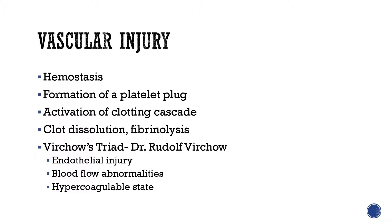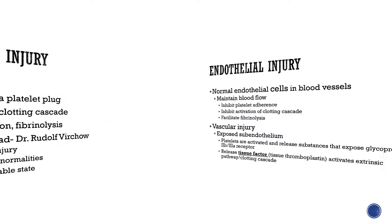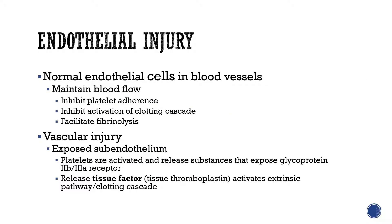Those three factors include: endothelial injury — for example, caused by atherosclerosis, which leads to platelet adhesion and aggregation; abnormalities of blood flow — such as turbulent blood flow in the arteries and stasis of blood flow in the veins, which promote thrombus formation; and finally, hypercoagulable states. These three make up Virchow's triad.